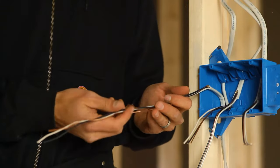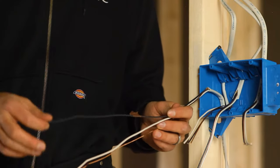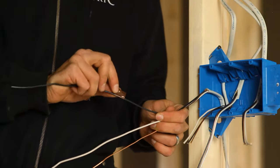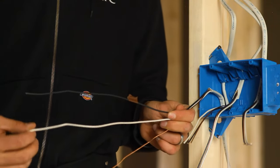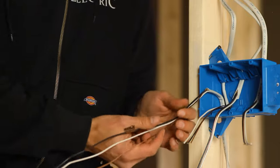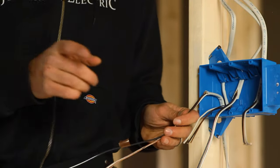This is my hot feed coming into the box. I have a black, which is marked with a colored flag, not white, gray, or green per code. This is my neutral conductor. This is my ground. I've stripped it extra long. You'll see why in a moment.